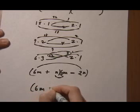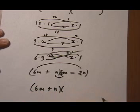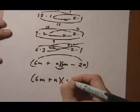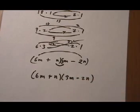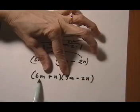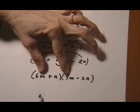So let's rewrite that and just check it out and make sure it foils out to give us the correct answer or to give us what we started with in the first place. 6m times 3m so we get 18m squared.